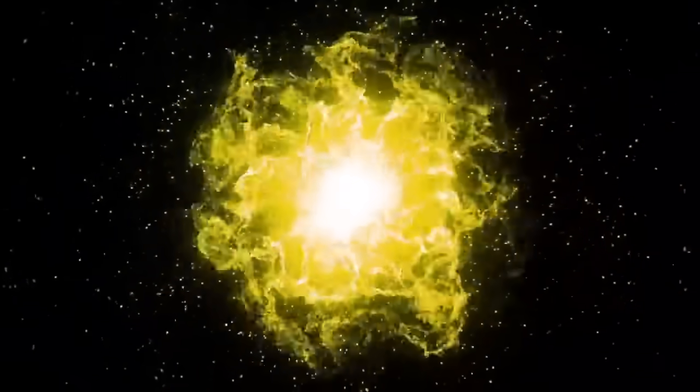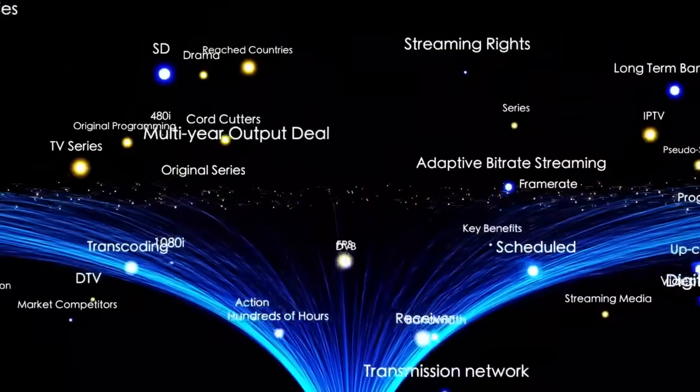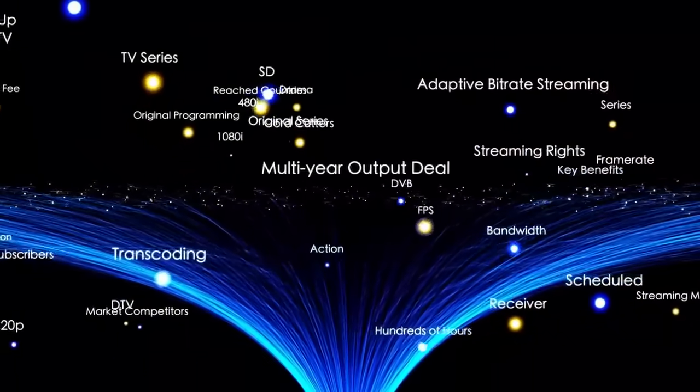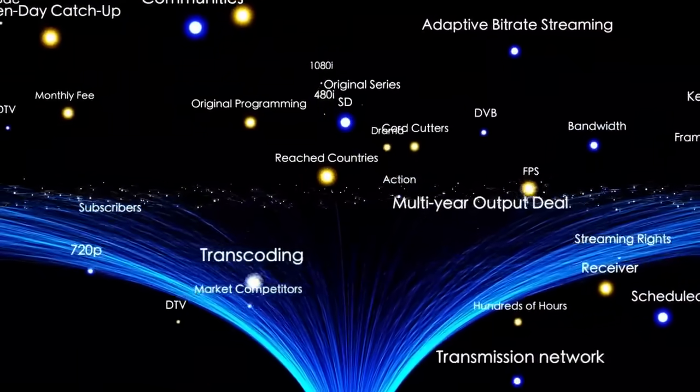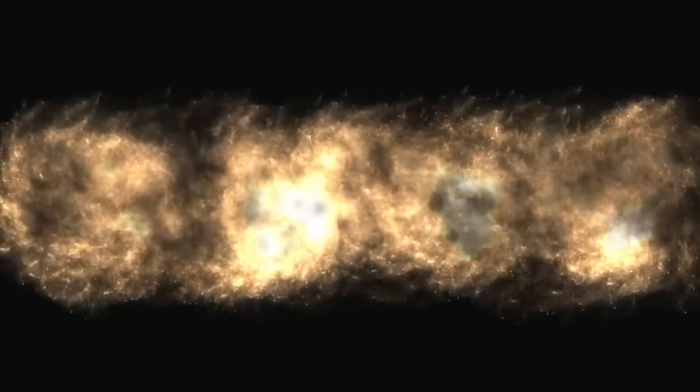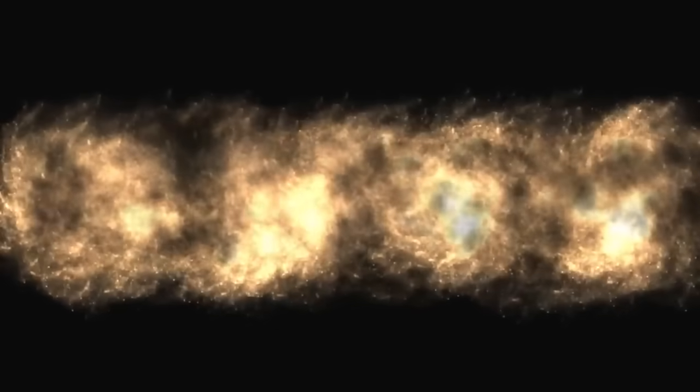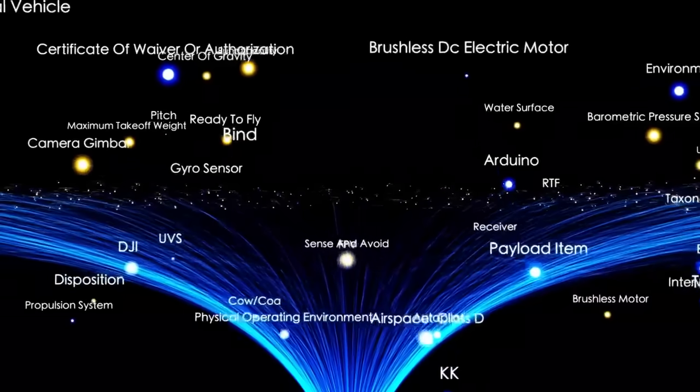This group is part of a much larger collection known as the Virgo Cluster, which contains over 1,500 galaxies. Virgo in turn belongs to an even grander structure, the Laniakea Supercluster. This supercluster is home to approximately 100,000 galaxies, each brimming with hundreds of billions of stars and planets.